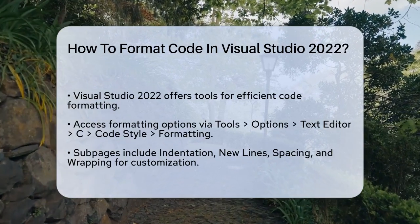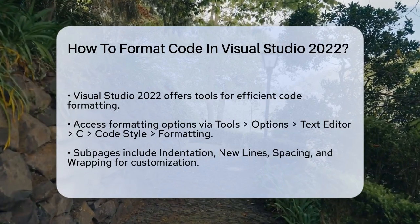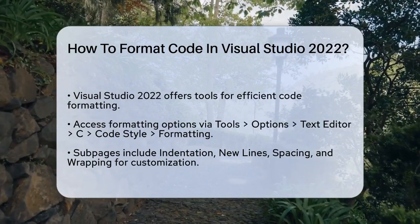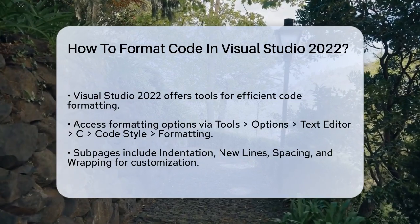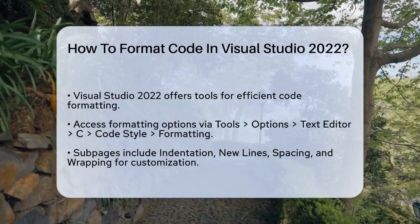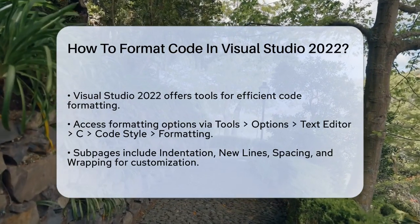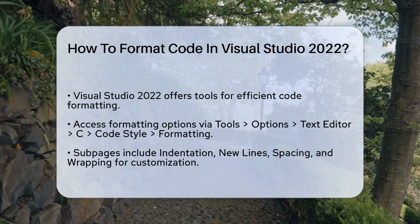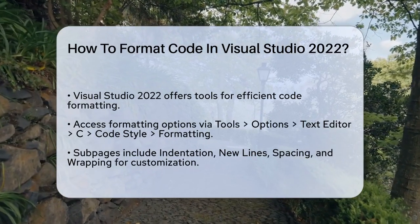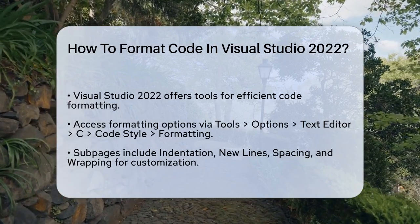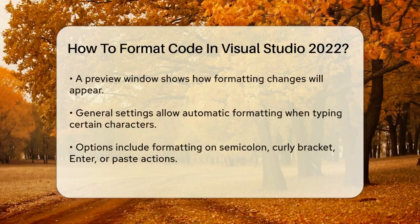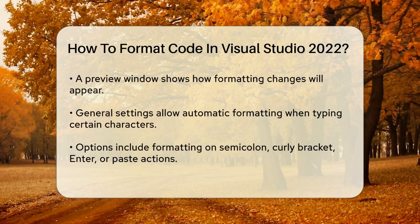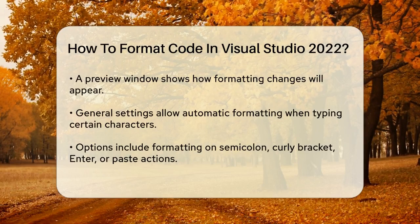First, let's talk about the built-in formatting options. You can access these by going to the menu bar, selecting Tools, then Options, and navigating to Text Editor > C# > Code Style > Formatting. Here, you'll find various subpages like Indentation, New Lines, Spacing, and Wrapping. Each of these pages allows you to customize how your code is formatted, and there's even a preview window at the bottom to show you how your changes will look.